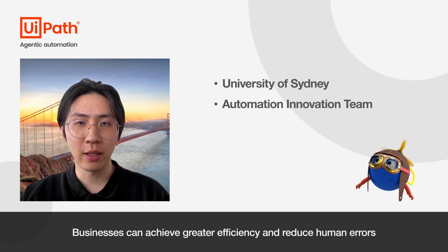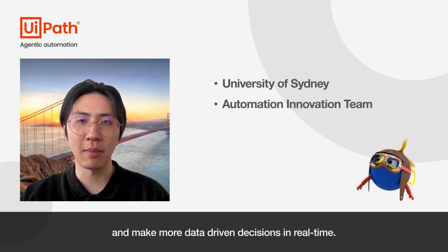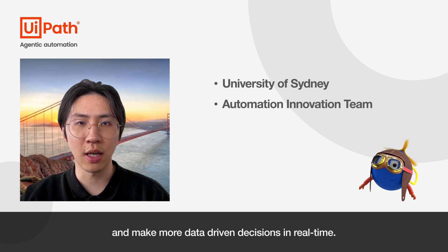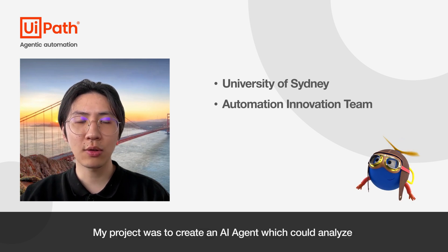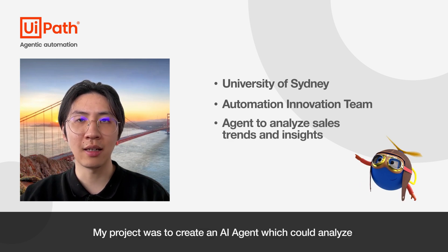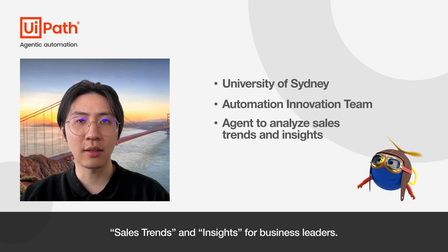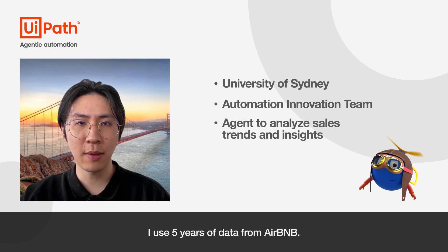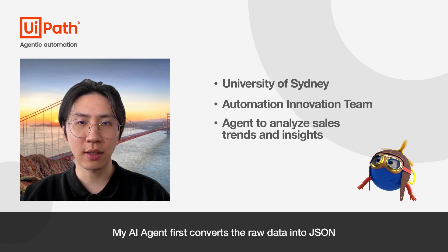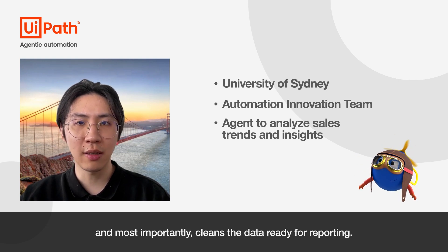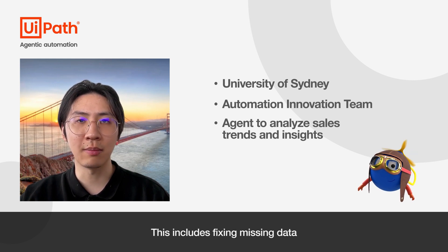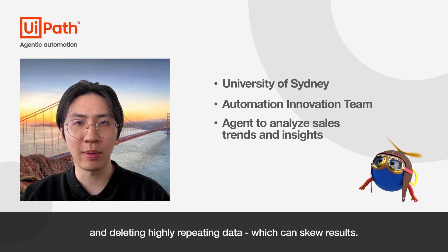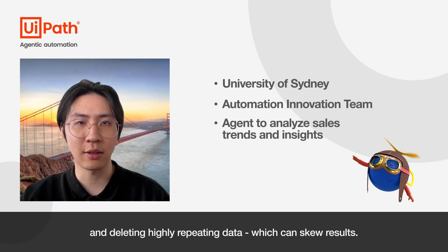I'm really excited about the possibilities agent automation will make in my field of study. Business can achieve greater efficiency, reduce human errors, and make more data-driven decisions in real time. My project was to create an AI agent which could analyze sales trends and insights for business leaders. I used five years of data from Airbnb. My AI agent first converts the raw database data into JSON, and most importantly cleans the data ready for reporting — including fixing missing data and deleting highly repeating data, which can skew results.